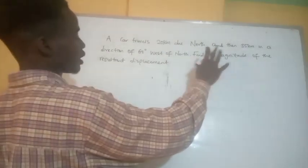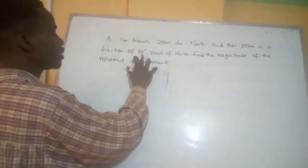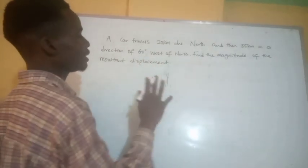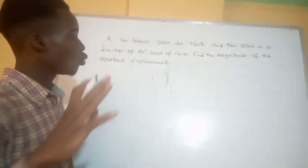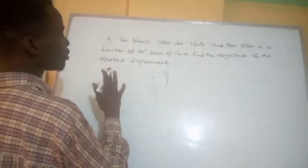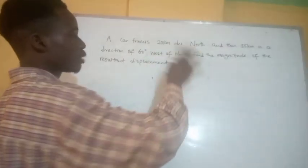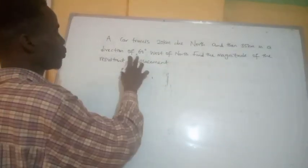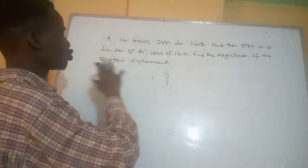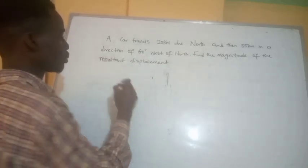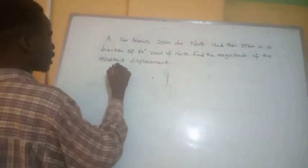So we have this question: a car travels 20 kilometers and then 35 kilometers in a direction of 60 degrees west of north. Find the magnitude of the resultant displacement. When we see these types of questions involving two magnitudes of displacement and an angle between them, what comes to our mind is the cosine rule.